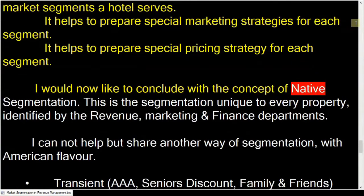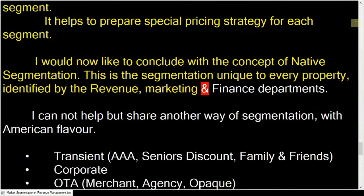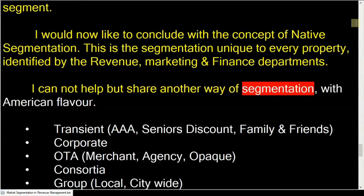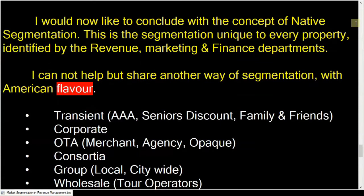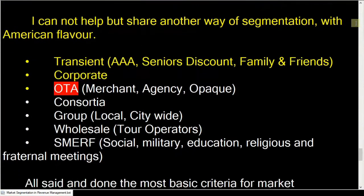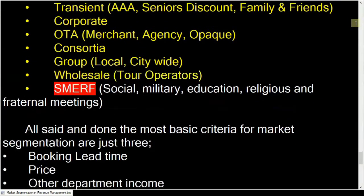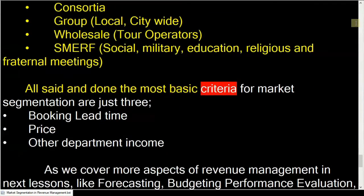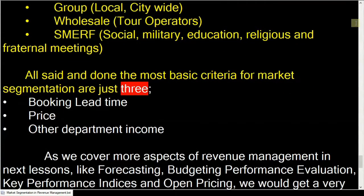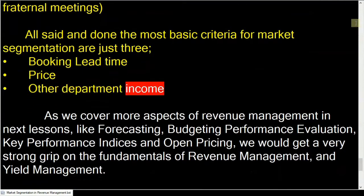I would now like to conclude with the concept of native segmentation — the segmentation unique to every property, identified by the revenue, marketing, and finance departments. Another way of segmentation, with American flavor, includes: Transient, Corporate, OTA, Consortia, Group, Wholesale, and Smurf. All said and done, the most basic criteria for market segmentation are just three: booking lead time, price, and other department income.